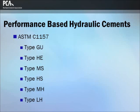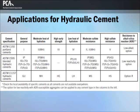Cements meeting the requirements of ASTM C-1157 meet physical performance test requirements, as opposed to prescriptive restrictions on ingredients or chemistry as found in C-150 and C-595. Type GU is a general purpose cement. Type HE is high early strength cement. Types MS and HS are moderate and high sulfate resistant cements. Types MH and LH are moderate and low heat of hydration cements.